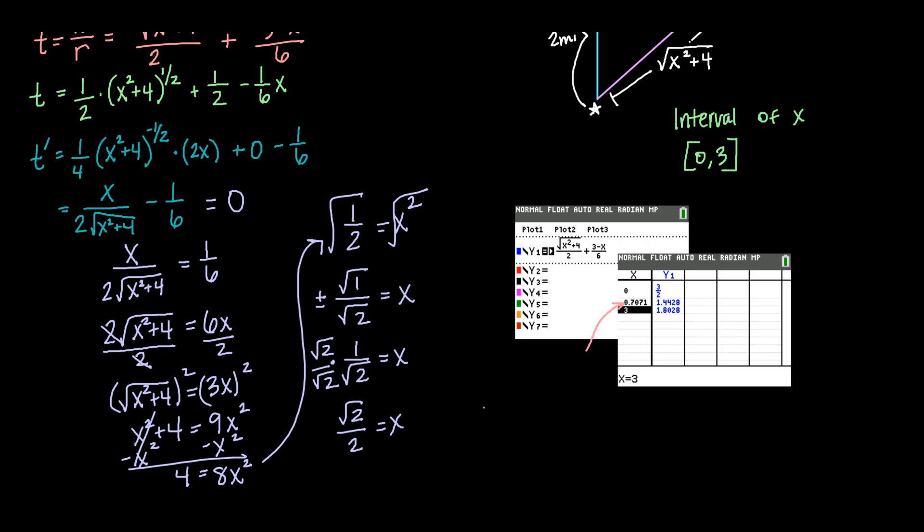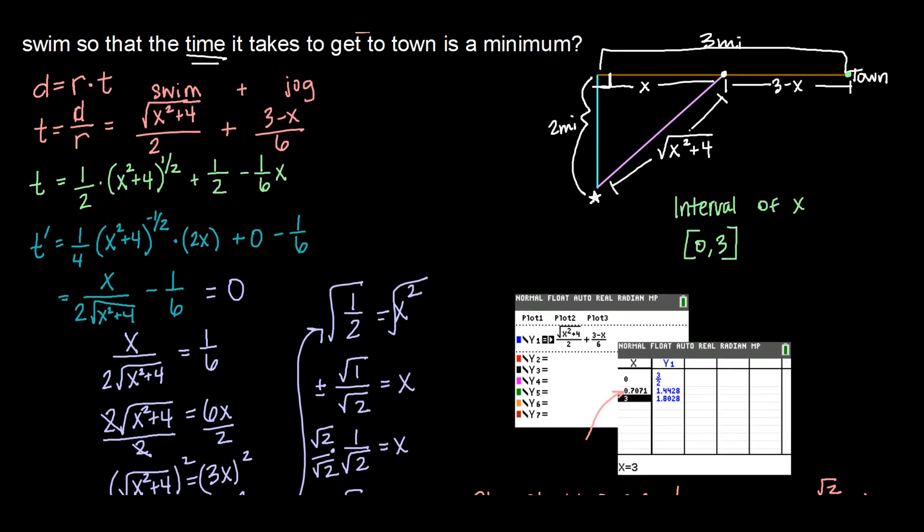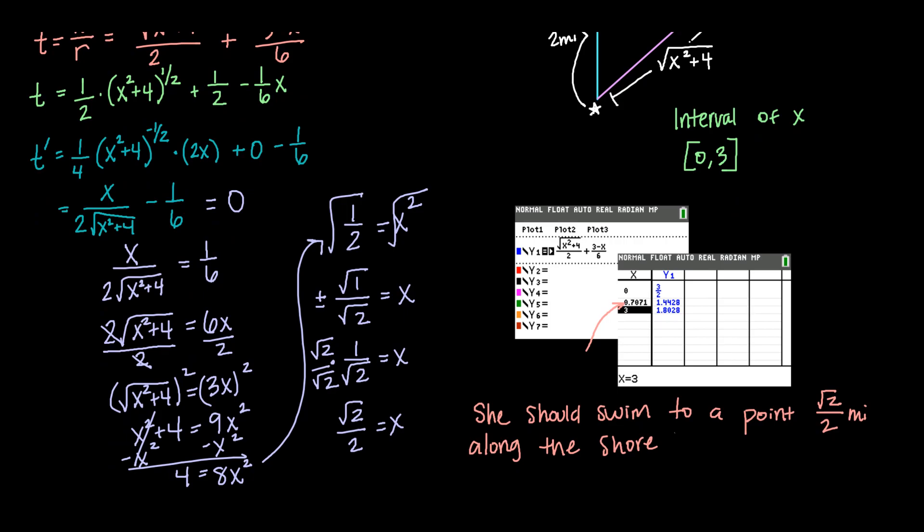So we can say she should swim to a point square root of two over two miles along the shore, since, again, just scrolling up a little bit so we can see our diagram. Remember that x was our distance along the shore that she would land. So she should swim to a point root two over two miles along the shore to minimize her time traveled.